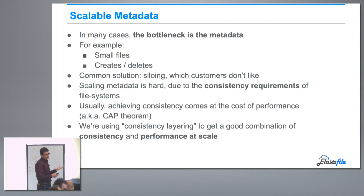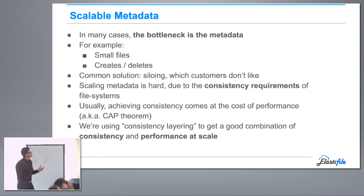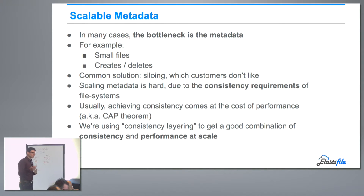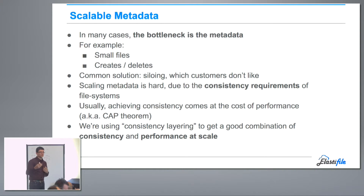A common solution to this is to do silos — different workloads on different machines — but customers don't really like that. The reason it's hard to scale metadata is because of the consistency requirements, but it's definitely possible. Usually there's a trade-off between consistency and performance in the sense that when you can't reach consistency, you have to stop and wait.